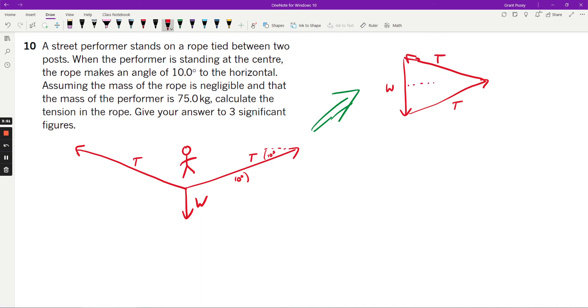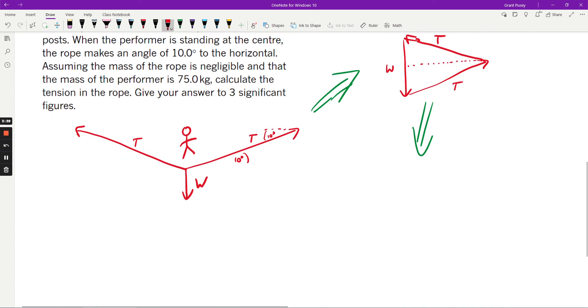And then what you've got now is a triangle which can be broken up into two right-angled triangles. So what I would do at this point is, because you know the tensions should be equal to one another, you could come down and say that there is a force going down as W over 2.